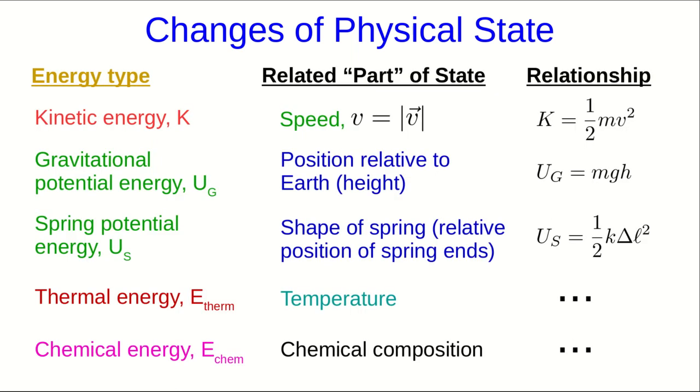So now we can just summarize a bunch of types of changes of physical state. And this is by no means a complete list. Kinetic energy is related to speed of objects. Gravitational potential energy is related to heights of objects. Spring potential energy is related to shapes of springs, or the relative position of spring ends. Thermal energy is related to temperature. Chemical energy is related to chemical composition. And so on and so on.